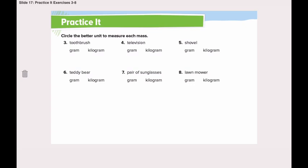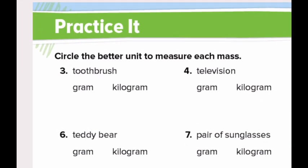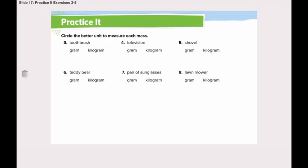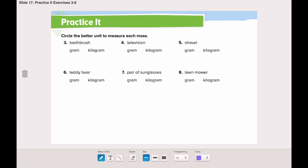The question asks you to circle the better unit to measure each mass. Number three is a toothbrush — is a toothbrush measured in grams or kilograms?